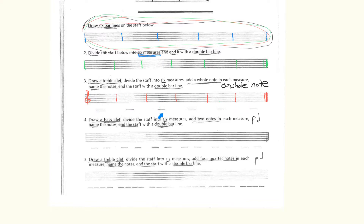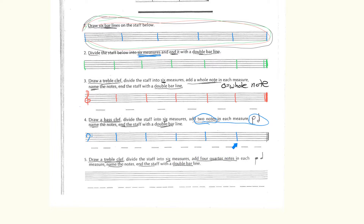Number four is very similar to number three, but you draw a bass clef on the staff, divide it into six measures, and now put two notes in each measure — half notes. See the examples of half notes on the staff. Name the notes based on the bass clef, and end it with a double bar line.